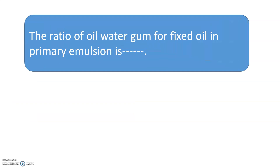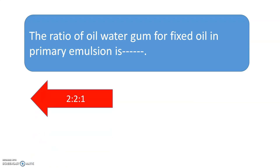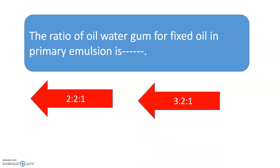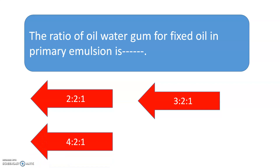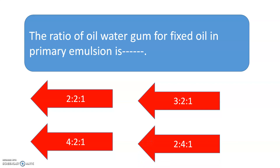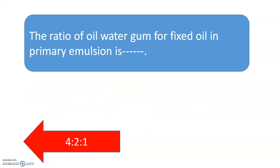The ratio of oil, water, and gum for fixed oil in the primary emulsion is? Options include 2:2:1, 3:2:1, or 4:2:1. The correct answer is: for fixed oil, the ratio of oil, water, and gum is 4:2:1 in the primary emulsion.